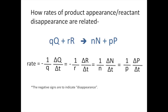You can use dimensional analysis to look at relative rates of reactants disappearing and products appearing. I'm going to give you a general chemical reaction and show you how the rates of disappearance of reactants and appearance of products are related. In this balanced chemical reaction, the lowercase letters represent the coefficients, and the notation shown tells you how the rates are related to each other.